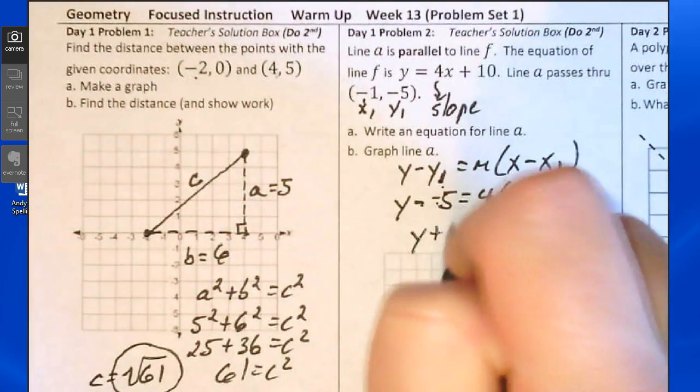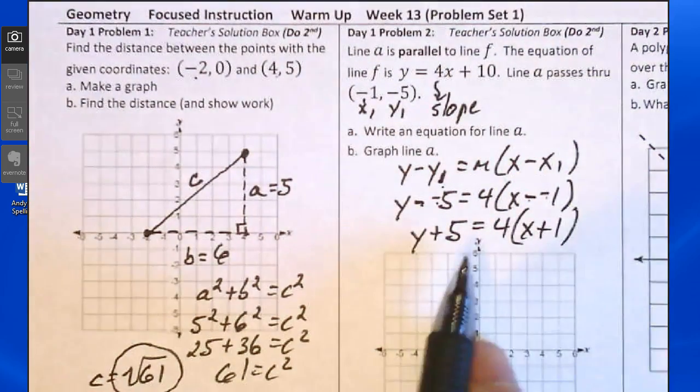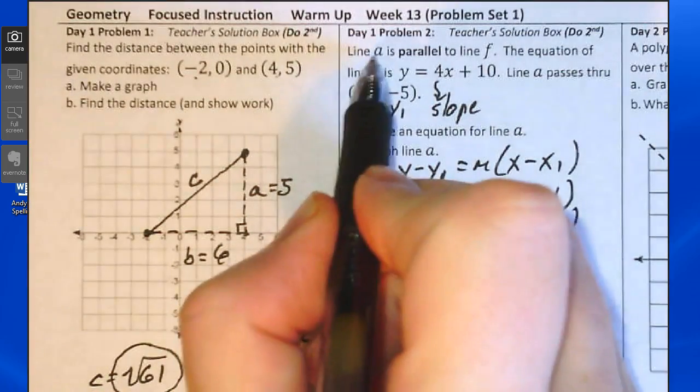So y plus 5 equals 4 times x plus 1. So here is our equation for line A.